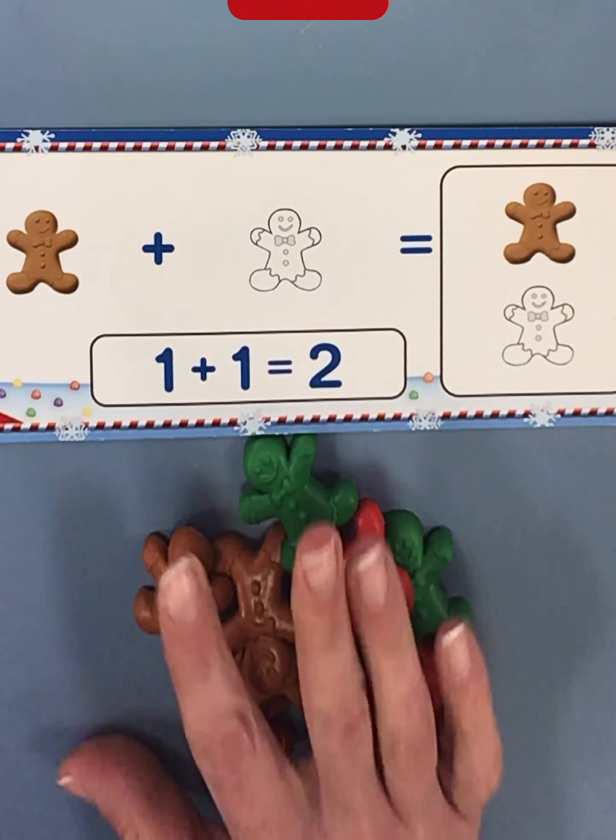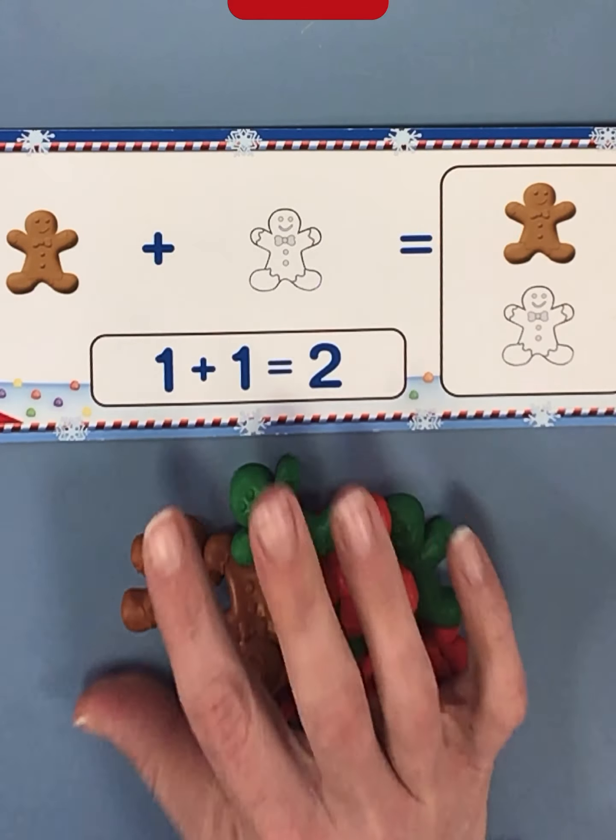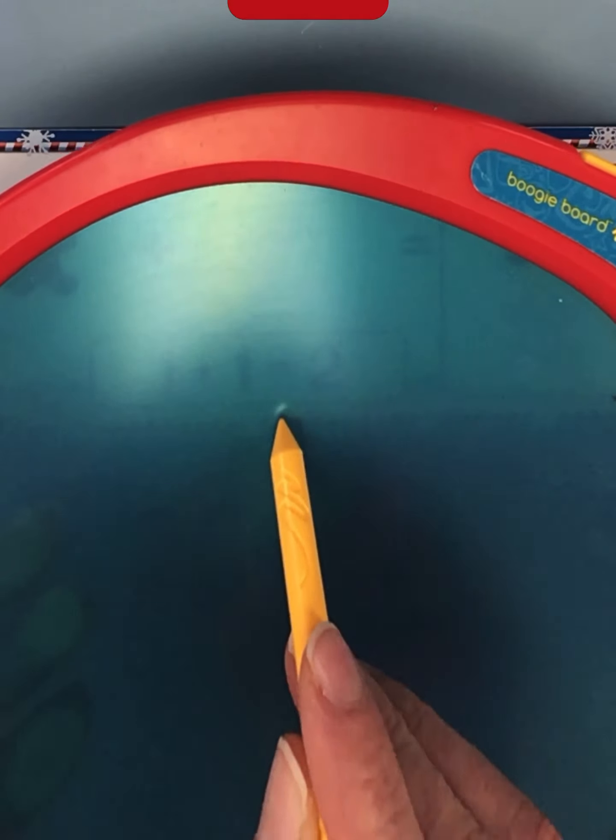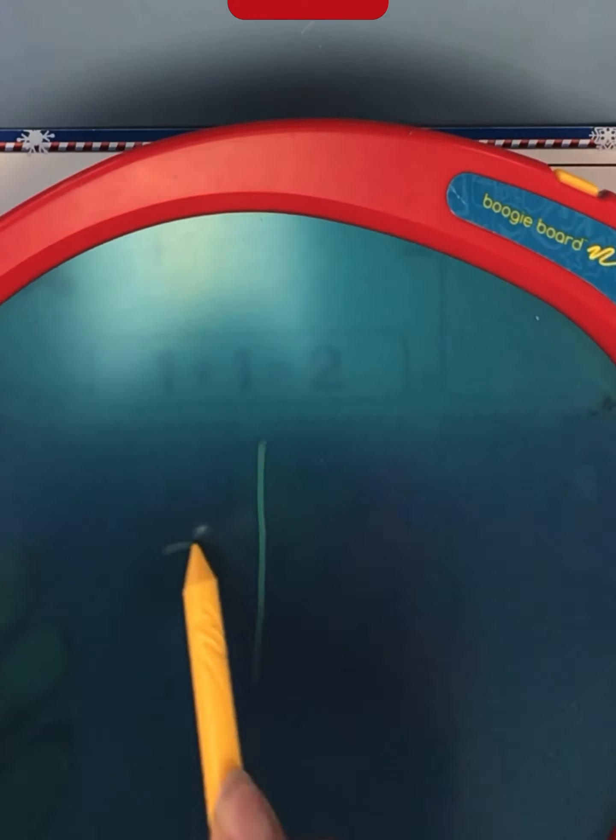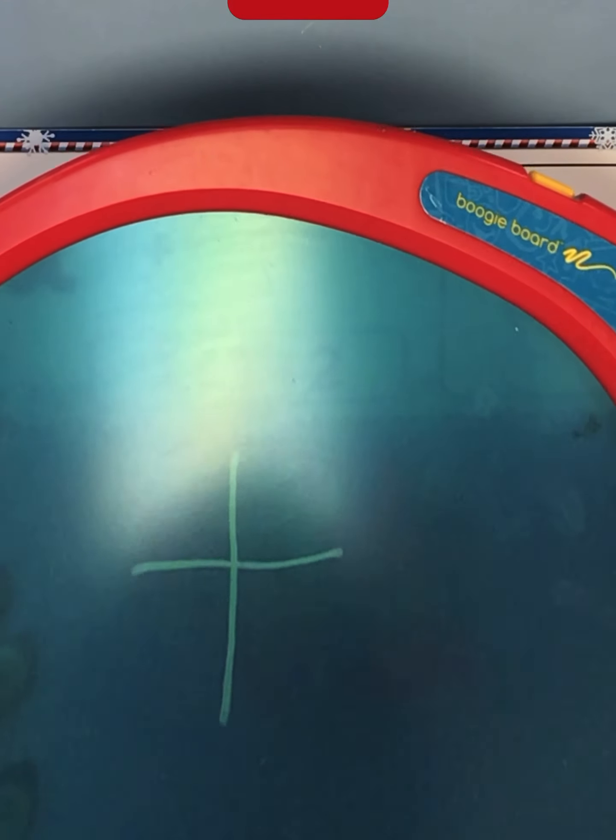We are going to practice adding, which means that you're going to give yourself more of something. And there is a special symbol that we use to show that we want more. It's called the plus sign. It's a straight line down, a straight line across. That's the plus sign. It means add more.